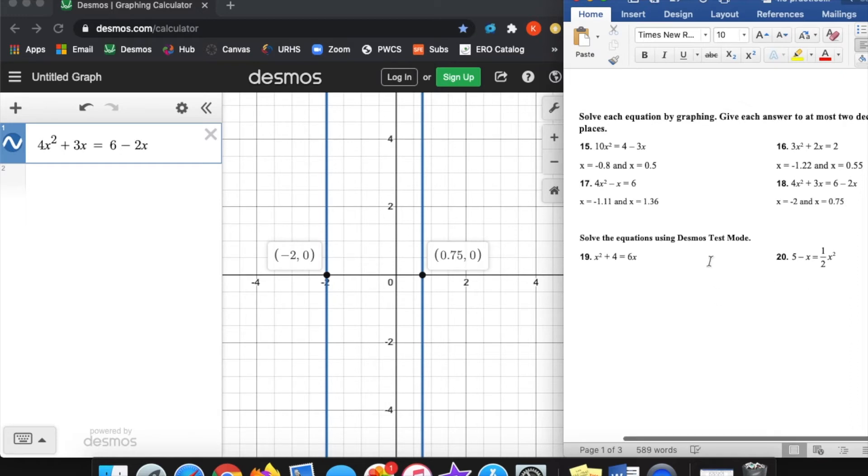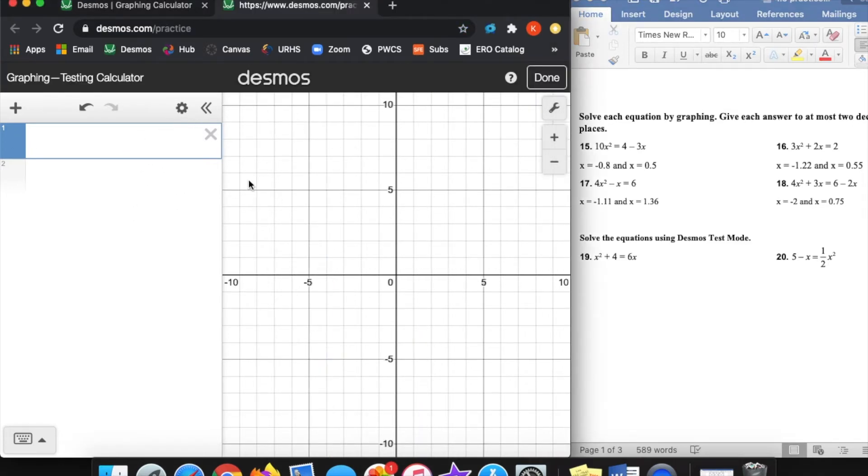Now here is the catch. This Desmos test mode. Now, we show you guys Desmos, and we started to use it instead of the yellow TI-84 calculators here in Virginia, Prince William County, because you're able to use Desmos on your state test at the end of the year, the SOL. So we wanted you to be able to use it. The catch here is this test mode, Desmos testing calculator. This is what you would have access to on the actual state test. And look, when I try to type in x squared plus 4 equals 6x, uh-oh, doesn't like it. Plotting single variable implicit equations is disabled. That's a fancy word for we're not going to do it for you.